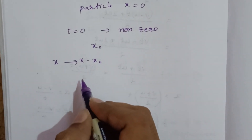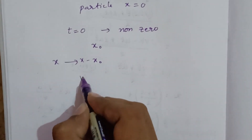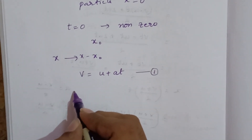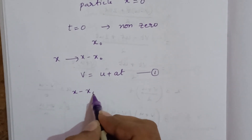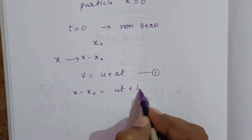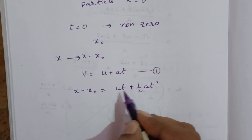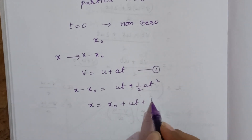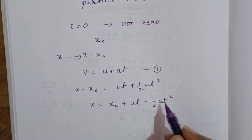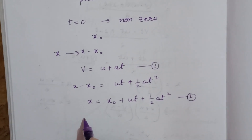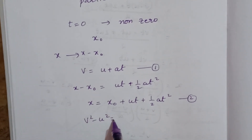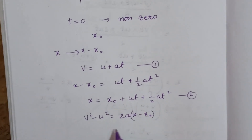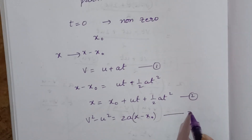The first equation has no change because no displacement term is given in it: V = U + At. In the second equation, X is replaced with X minus X₀, giving X minus X₀ = Ut + ½At². Rearranging, X = X₀ + Ut + ½At². That is equation 2. For the third equation, V² - U² = 2AX, X is replaced with X minus X₀, giving equation 3.